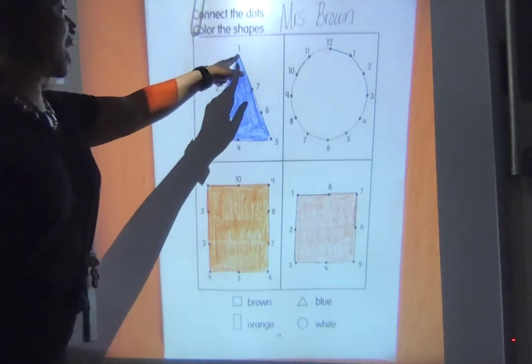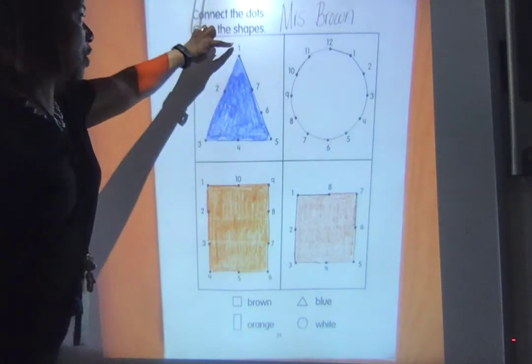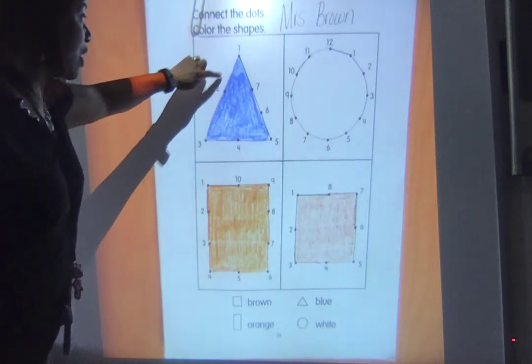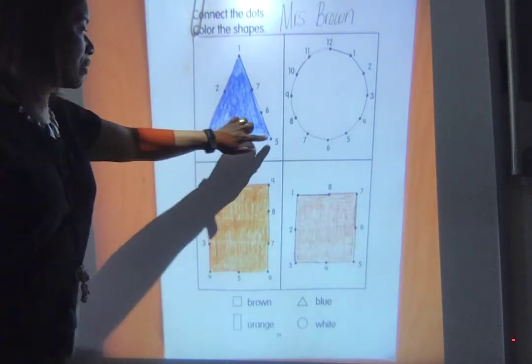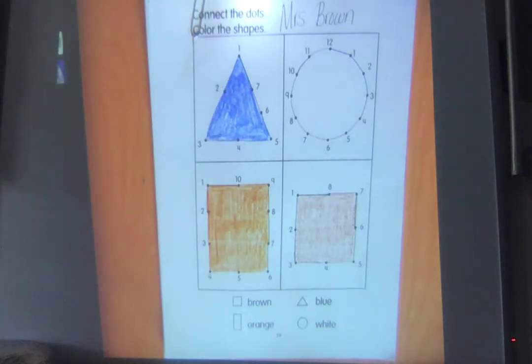So make sure you're connecting the dots by the numbers. Notice I didn't go from 1 to 2 over here. I went to the dot by 1, by 2, 3, 4, 5, 6, 7. Okay? All right.